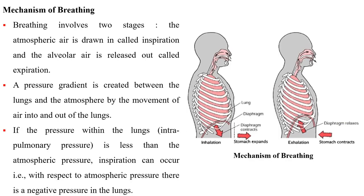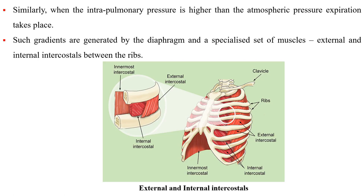Breathing involves two stages: inspiration, where atmospheric air is drawn in, and expiration, where alveolar air is released out. A pressure gradient is created between the lungs and the atmosphere by the movement of air. If the pressure within the lungs is less than atmospheric pressure, inspiration occurs — that is, there is a negative pressure in the lungs. Similarly, when intrapulmonary pressure is higher than atmospheric pressure, expiration takes place. Such gradients are generated by the diaphragm and specialized muscles — external and internal intercostals — between the ribs.